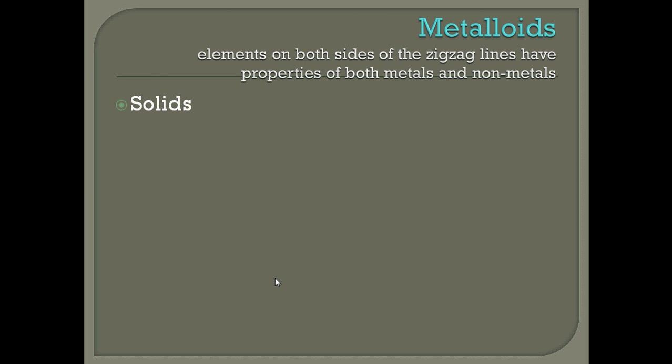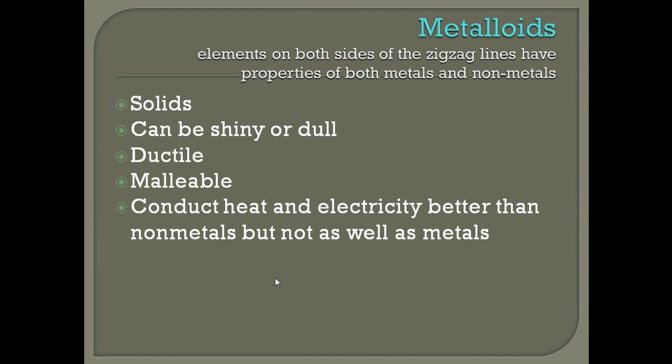The last category we'll talk about is metalloids. These are found right at that zigzag or stair-step line, and you should have colored those purple on your periodic table. Metalloids have both properties of metals and non-metals — they're mostly solid, they could be shiny like a metal or dull like a non-metal, and they are ductile and malleable. They can conduct heat and electricity better than non-metals, but not as well as metals, so we call these your in-between elements.